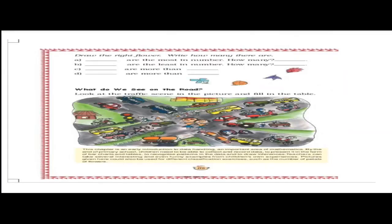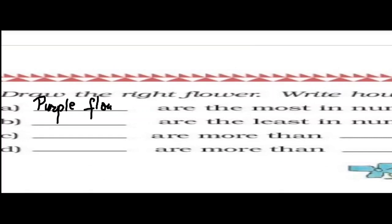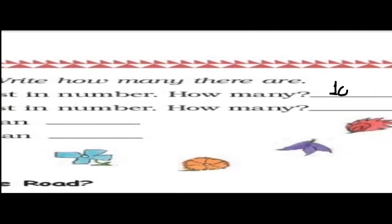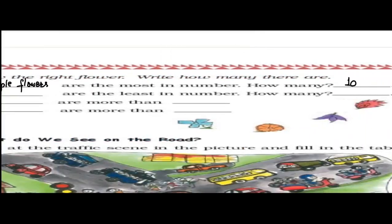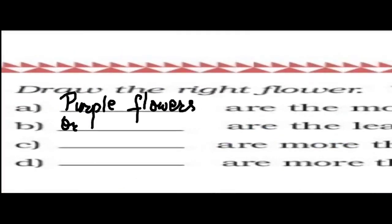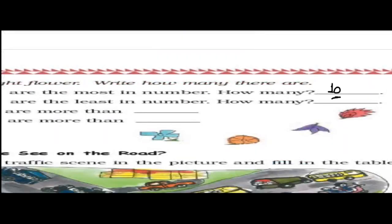So let us move to the next questions. Which are most in number? We saw that purple are the most in number. Purple flowers are most in number — there were ten purple flowers, so we will answer ten. Which are least in number? We saw that orange flowers — there are only five orange flowers — so you will write: orange flowers are least. They are five in number, so you will write five here.